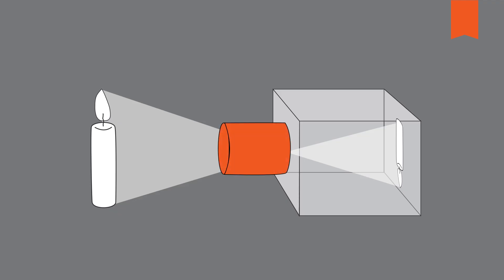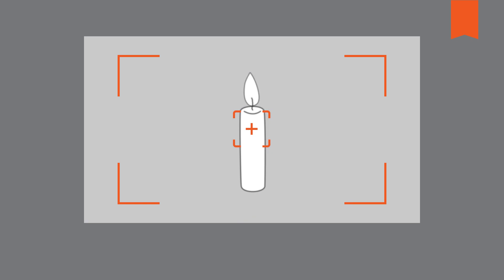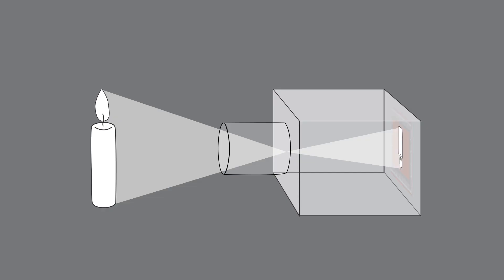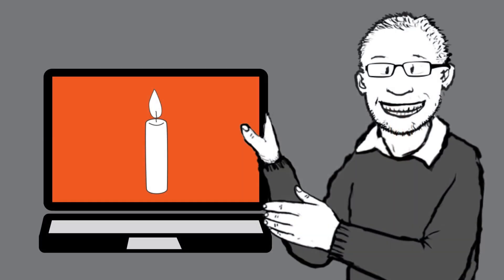Instead of the pinhole, we use a lens. It allows us to keep the object in focus and prominent at the image level within the camera, despite working with different focal lengths and settings. The image sensor is another distinct component. It is used to convert image information from the lens into a digital image without the detour of tracing paper or chemicals.